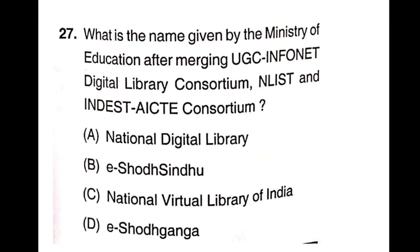Question 27: What is the name given by the Minister of Education after merging EGC Net and Info Net into a digital library consortium? The options are NLIST, INDEST, AICT Consortium, and Mood Consortium.